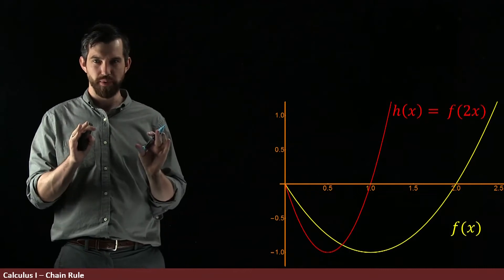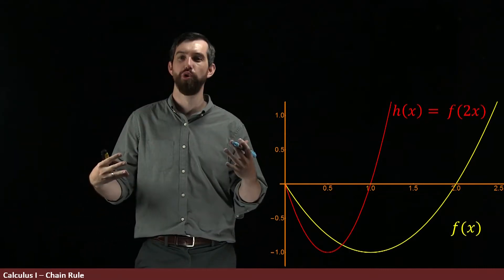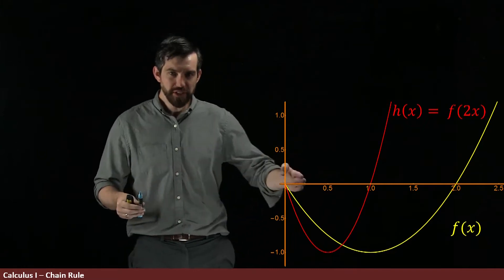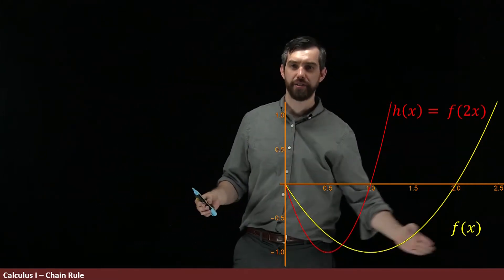I want to try to illustrate to you a little bit of how the chain rule works graphically. What I have is two functions. The first is this parabola f of x.